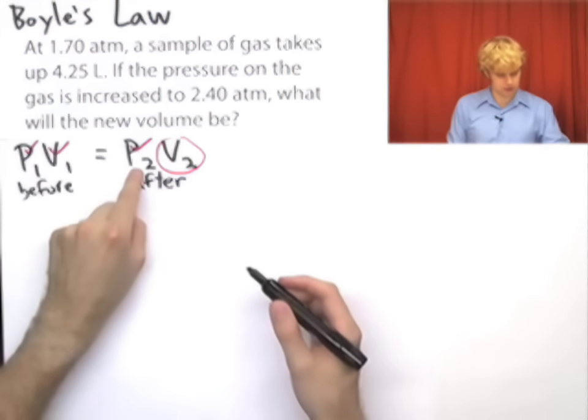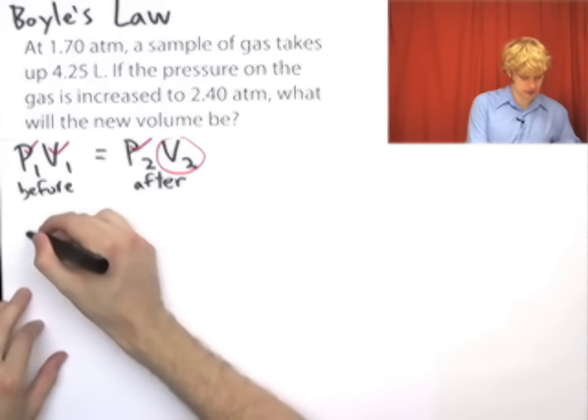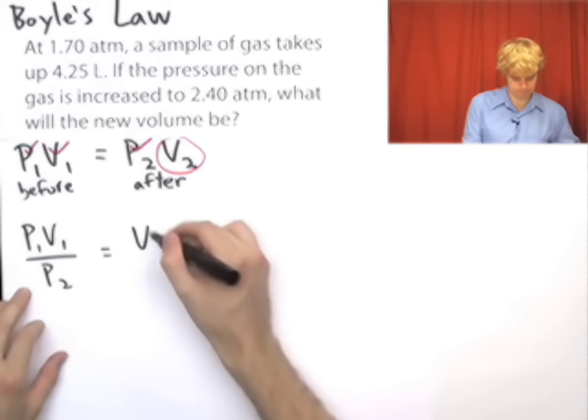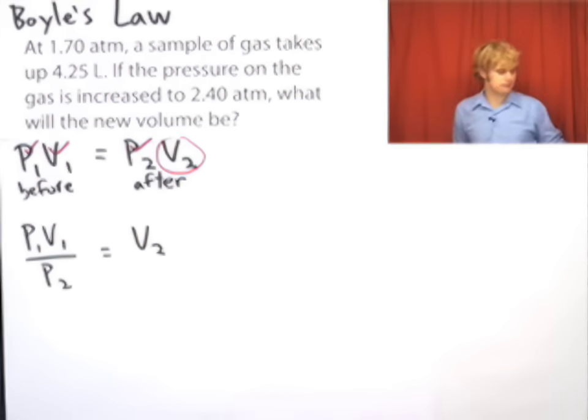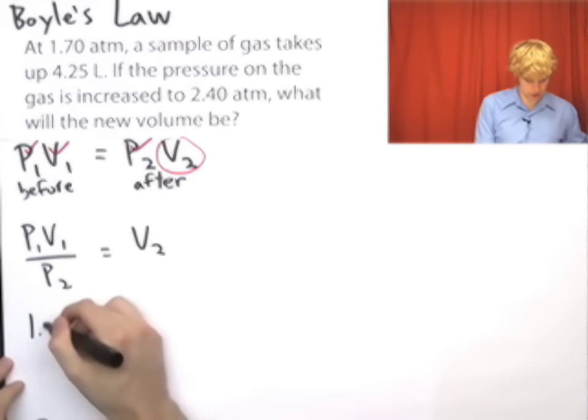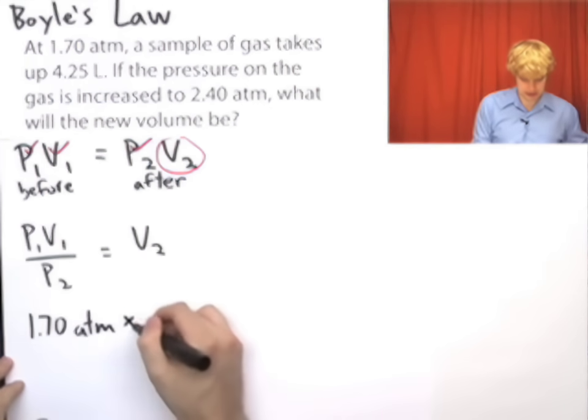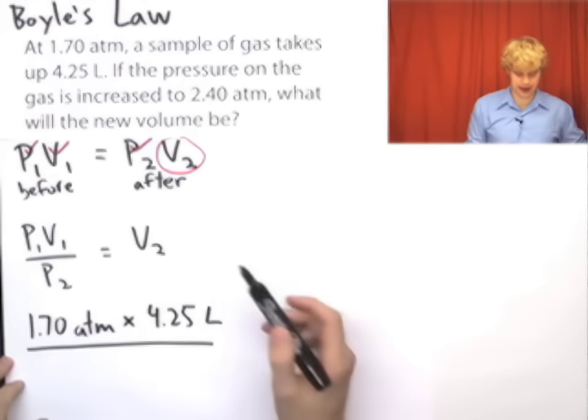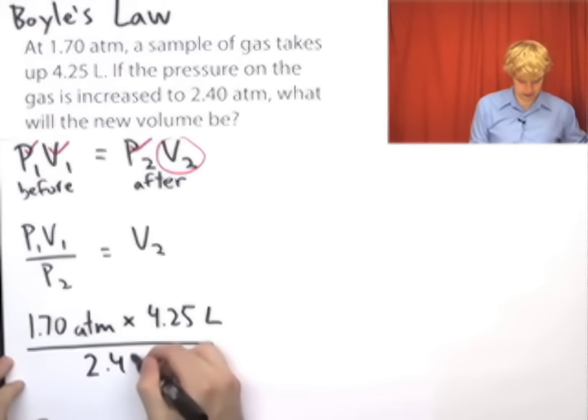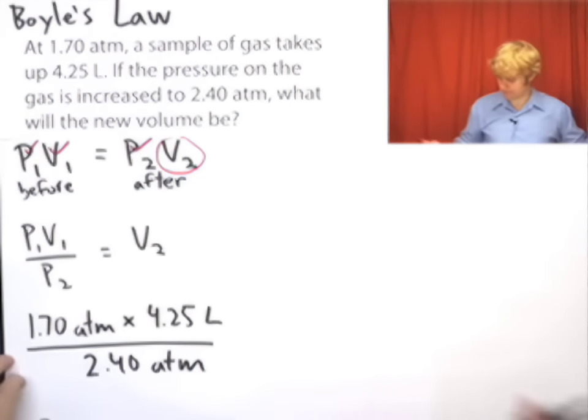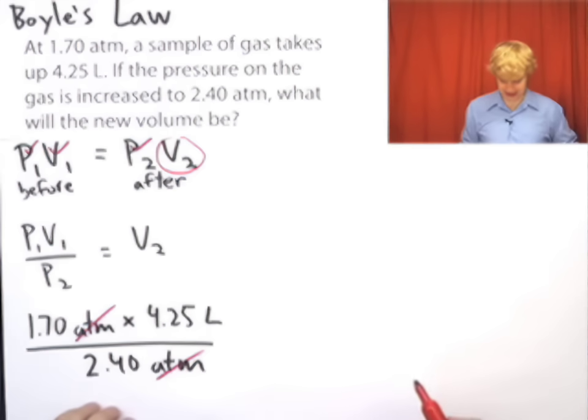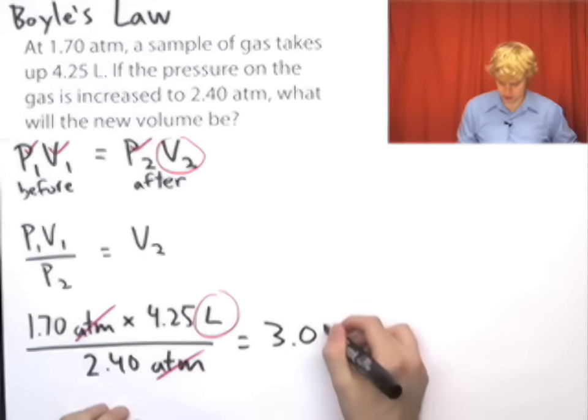We'll want to rearrange this by moving P2 under this other thing. So we're going to get P1V1 divided by P2 equals V2. And now let's go ahead and plug in our numbers. Initial pressure is 1.70 atm times initial volume, which is 4.25 liters, divided by the second pressure, which is 2.40 atm. Now let's take a look at how we set this up. Atmospheres up here, atmospheres down here, which means that the atmospheres are going to cancel out. We're left with liters, and our final answer is going to be 3.01 liters.